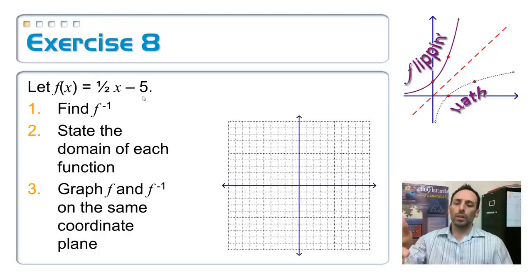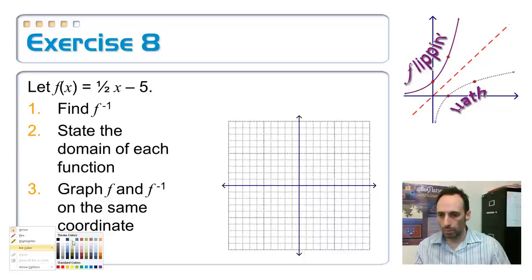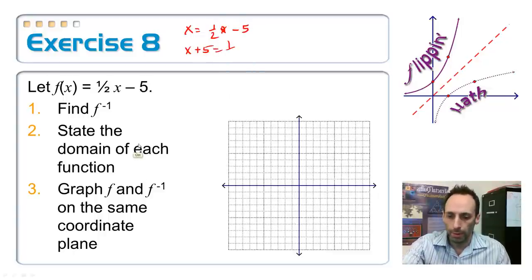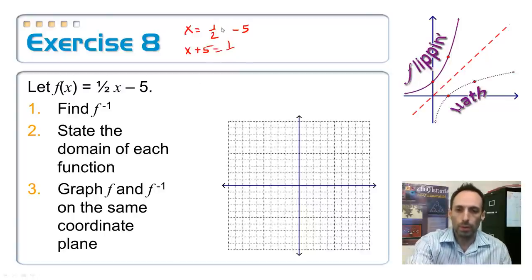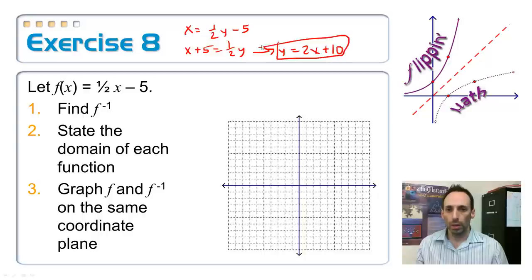Okay, so let's find the inverse of this linear function, 1 half x minus 5, and then state the domain and the range, and then graph them both over here on the coordinate plane. So, my equation, my inverse of my equation is, I'm going to switch that f of x, make it a y, and then switch the x and the y. So, x is equal to 1 half y minus 5. Add the 5 over, x plus 5 equals a half y. Multiply everything by 2, so the inverse then is 2x plus 10.